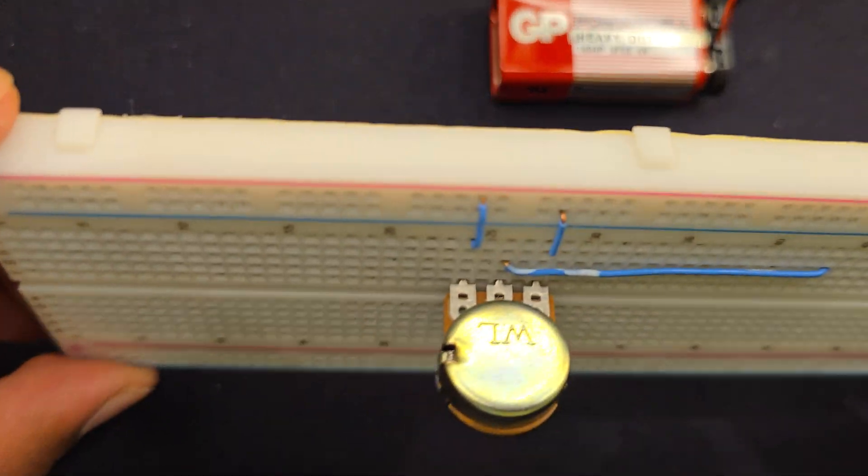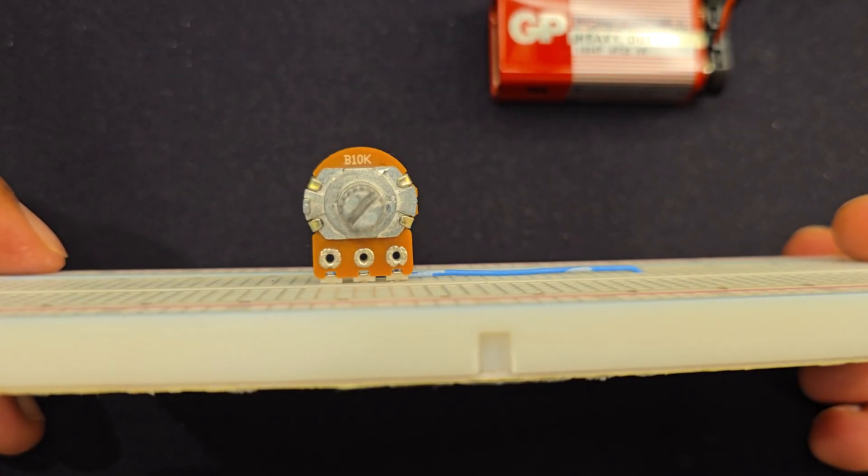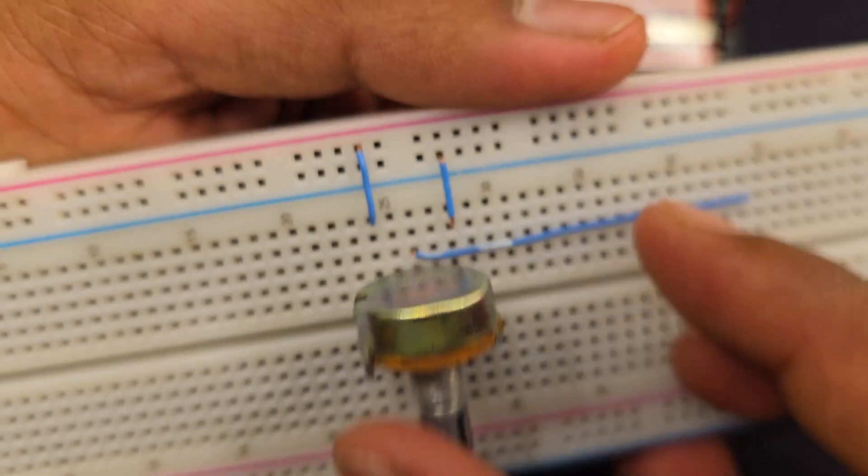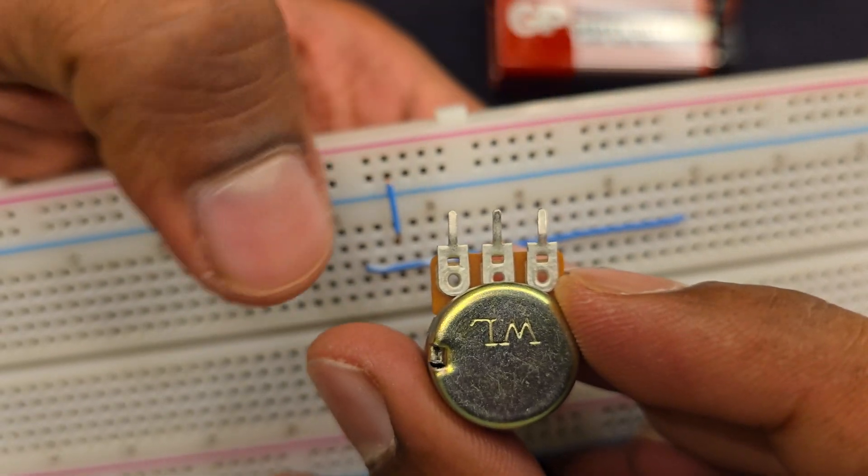In the last video, we made this voltage divider using this 10k potentiometer. If you haven't watched that video, I'll tell how it works. So this is a 10k potentiometer. It has three pins.